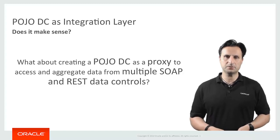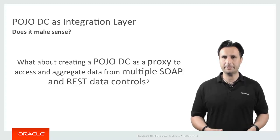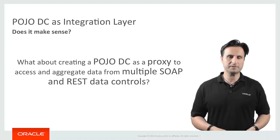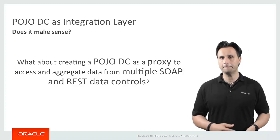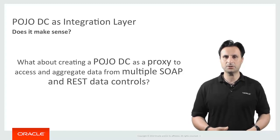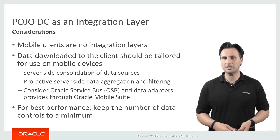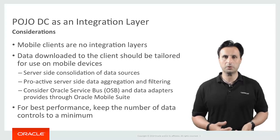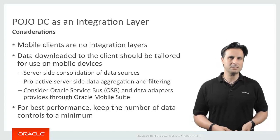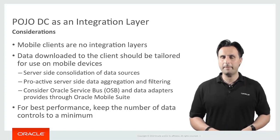Usually you will have a bunch of services to deal with — SOAP services, REST services. It's really rare that enterprise applications work with a single service source. So if you have, say, 10 services, it might seem like a good idea to use the Pojo Data Control to access all of them, aggregate the information, and expose a single API. On first consideration it looks good, but on second consideration it's not, because it means you're bringing data to the client that typically isn't meant to be used there — producing a huge load. Mobile clients don't really make good integration layers.